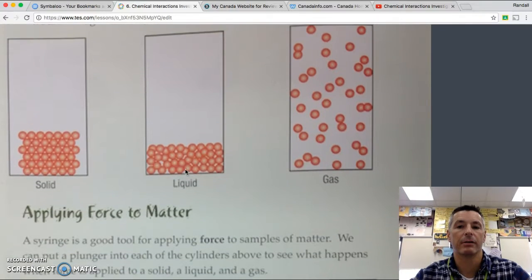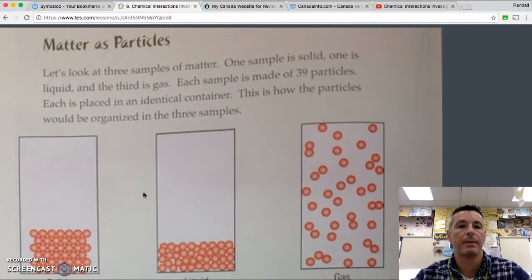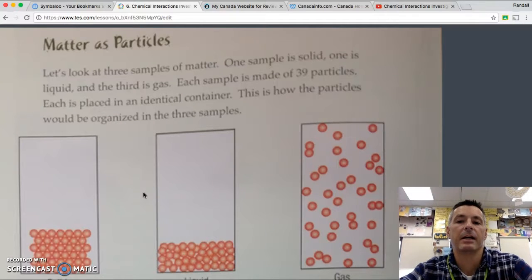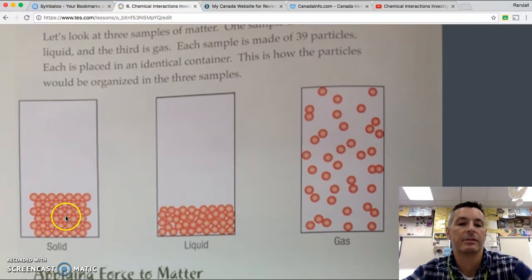Matter as particles. Let's look at three samples of matter. One sample is a solid, one a liquid, and a third is a gas. Each sample is made of 39 particles. Each is placed in an individual container. This is how the particles would be organized in three samples. Solid, liquid, gas. 39 particles each.